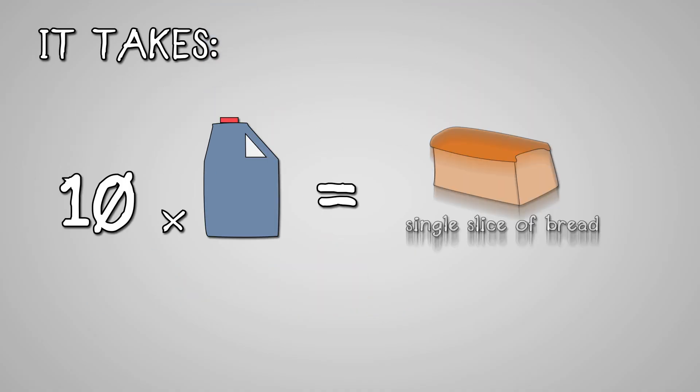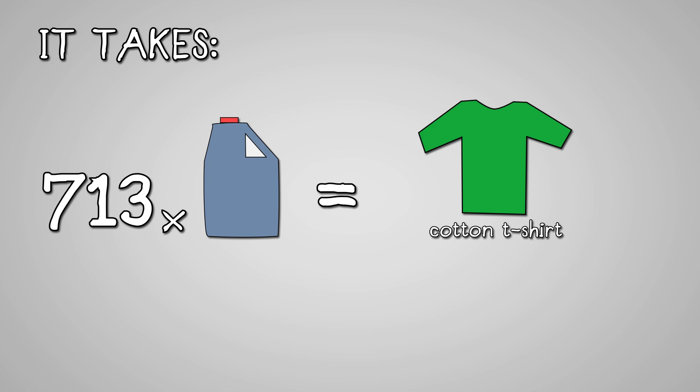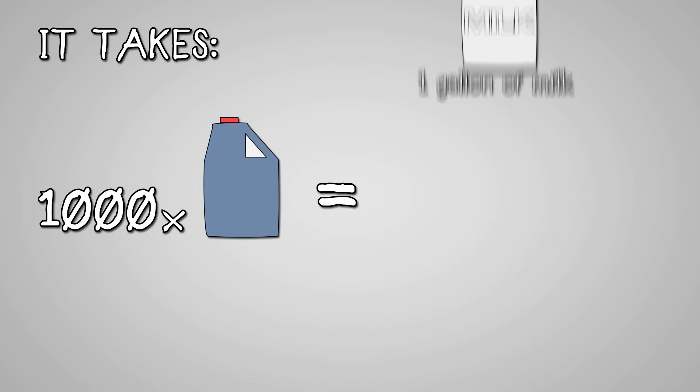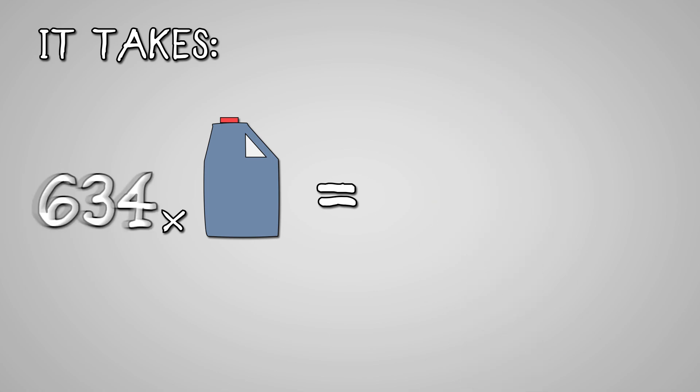It takes 10 gallons to make a single slice of bread, 713 gallons to produce a cotton t-shirt, 1,000 gallons to make one gallon of milk, and 634 gallons to produce one burger.